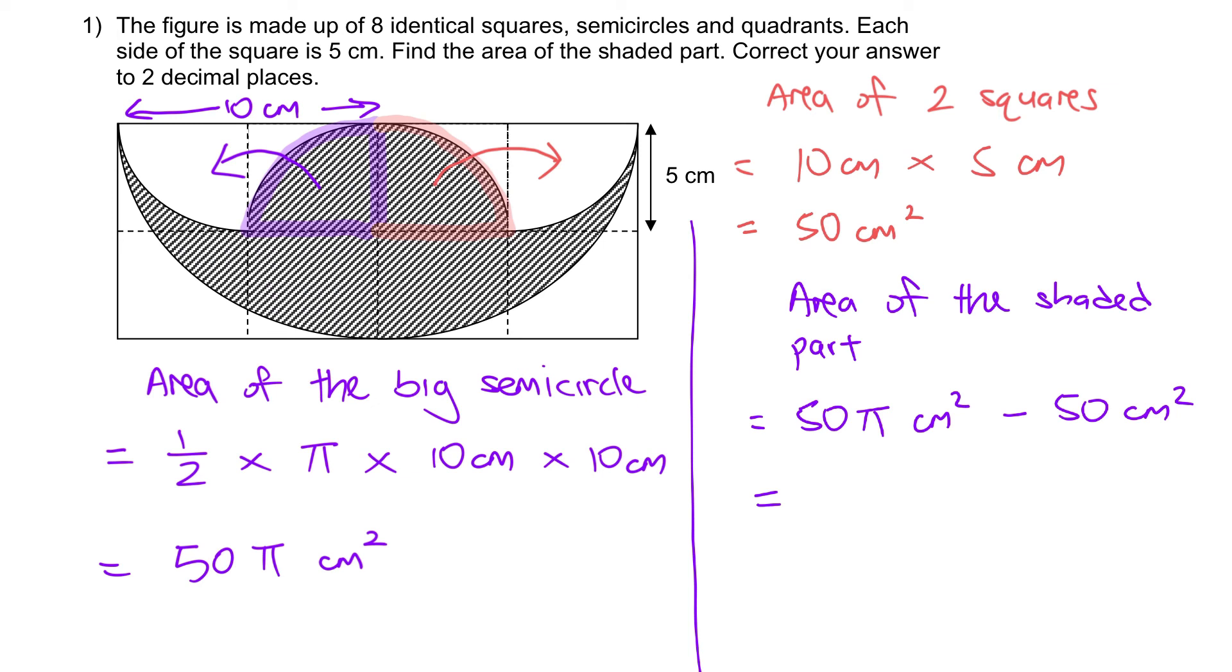Remember to correct to two decimal places. The answer is 107.08 cm², corrected to two decimal places.